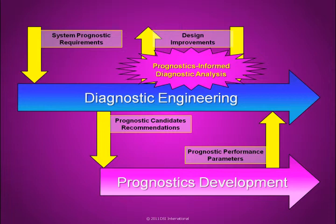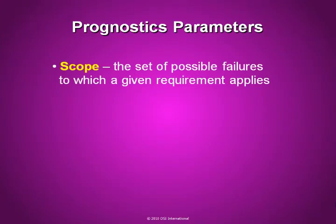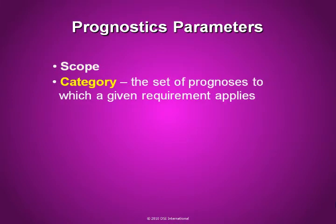A review of system prognostic requirements reveals that nearly all requirements can be broken down into five basic parameters. The first is scope — the set of possible failures to which a given requirement applies. Common scopes include mission-critical failures, essential function failures, or failures that necessitate a system abort. The category is the set of prognoses to which a given requirement applies, such as embedded or sensor-based prognoses.